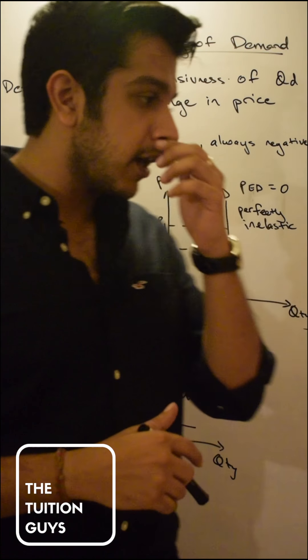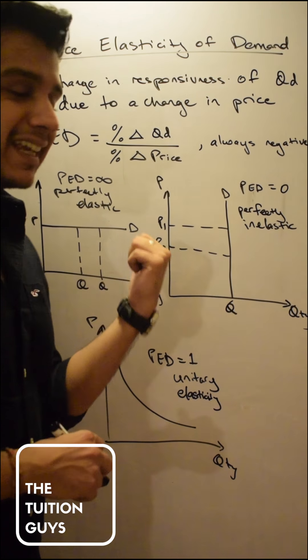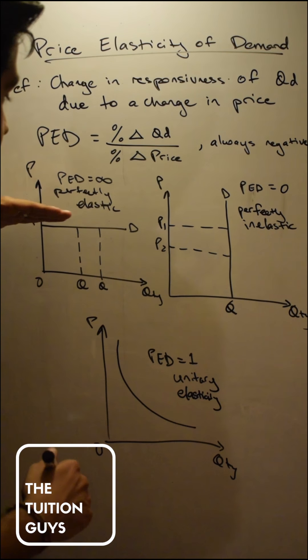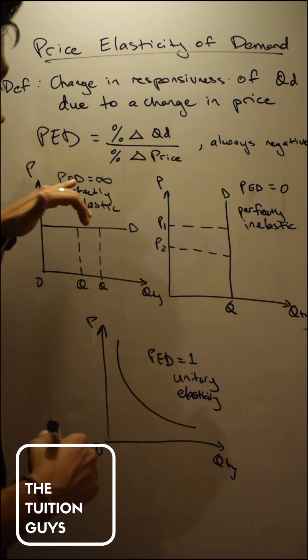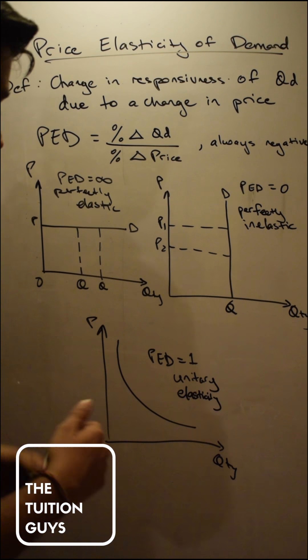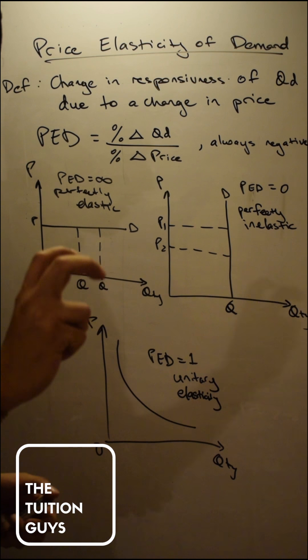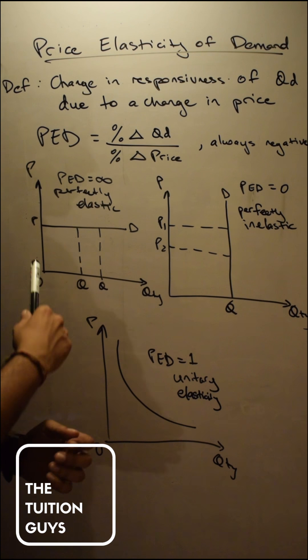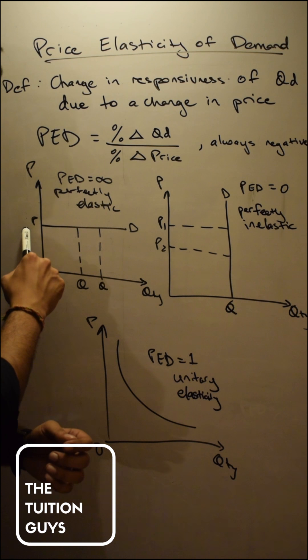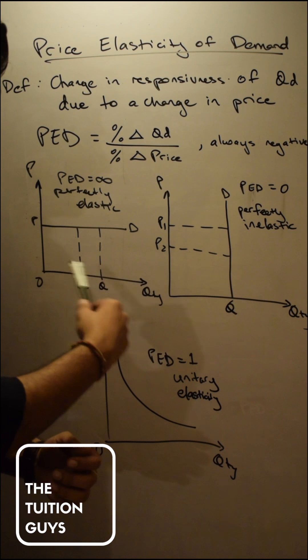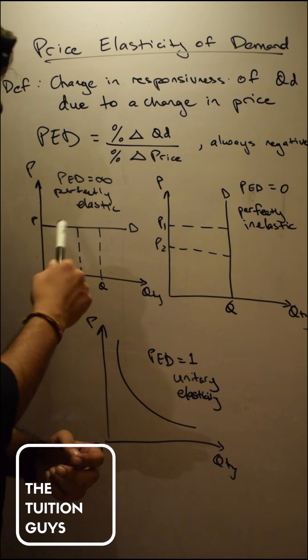Now one extreme is a perfectly elastic demand curve, which means that the demand curve is horizontal completely, or also PED is equal to infinite or infinity as you like to call it. Now that means that at that price my quantity can keep fluctuating. I can consume more or less at that same price. I don't care. But the minute the price goes up, I'll stop consuming that product altogether.